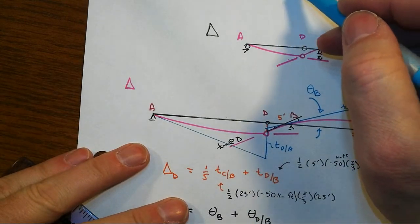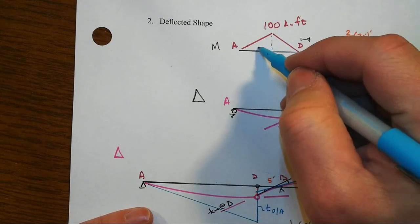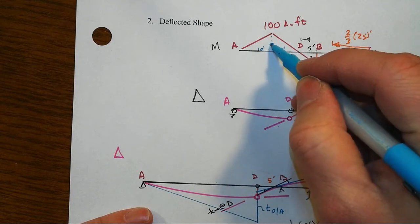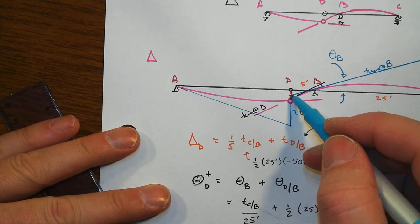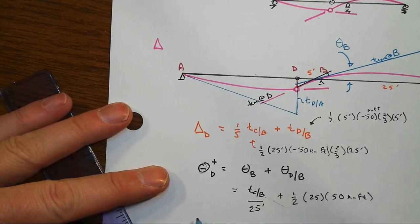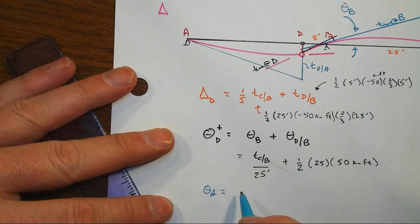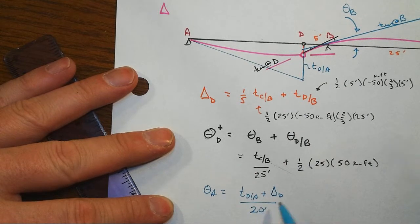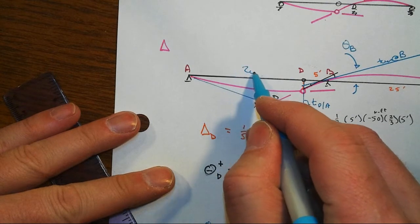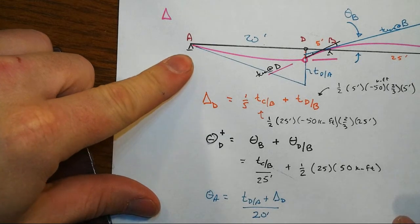So that would be the first moment of this triangle, this triangle right here, which is symmetric, right? It's 10 foot, 10 foot, and so we could deal with that and we can get that little piece. But we'll have to add to it here that theta A would be equal to opposite over adjacent, so that would be TDA plus the displacement at D all divided by then that 20 feet and that is that portion right there. That would tell us theta A, right?